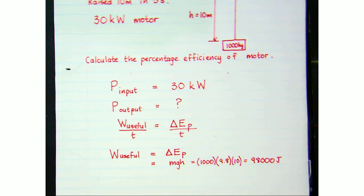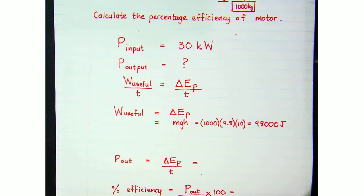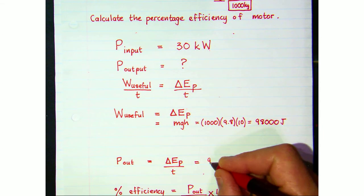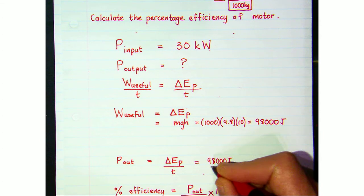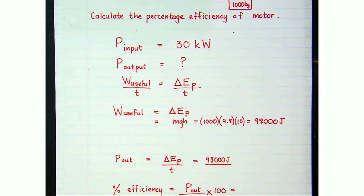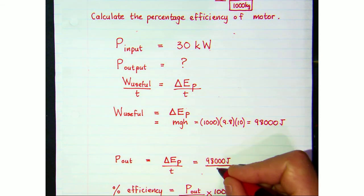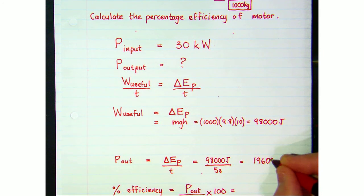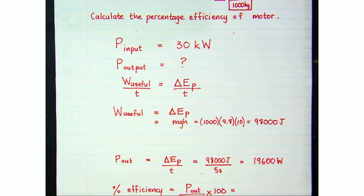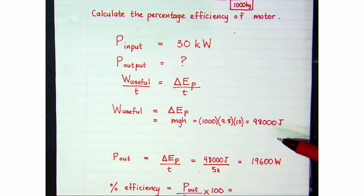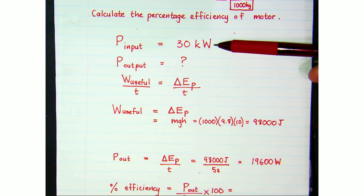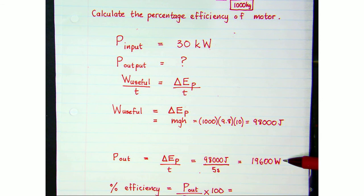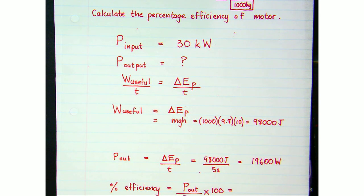Now we calculate the output power of this motor. The output power equals the change in potential energy — 98,000 joules — divided by the time taken, which was five seconds. Dividing gives a power output of 19,600 watts. You'll notice that doesn't equal the input power of 30,000 watts; the output power doing useful work per second is only 19,600 watts.